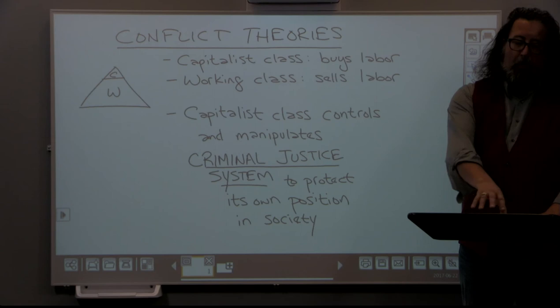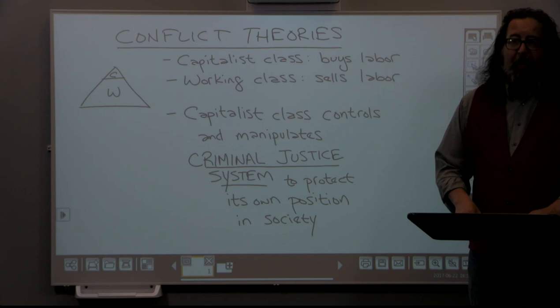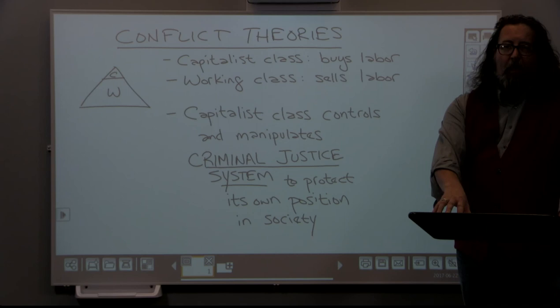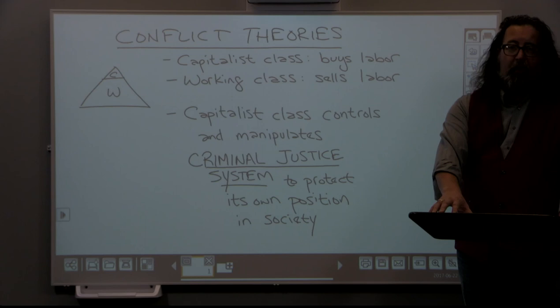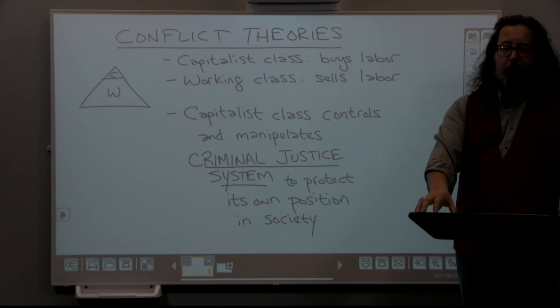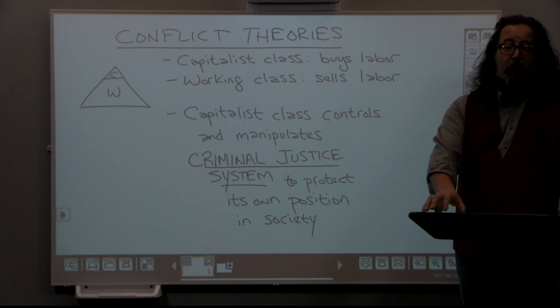When we flip the coin and look at the types of crimes most often committed by the capitalist class, we call those white collar or corporate crimes — things like fraud, embezzlement, and tax evasion. The penalties for those are much less severe. There are people serving life sentences for stealing a piece of pizza or a pair of socks from Walmart because of three strikes rules, whereas a person who embezzles millions or commits fraud cheating thousands of people out of billions of dollars is likely to receive probation, fines, or what are sometimes called country club prisons.